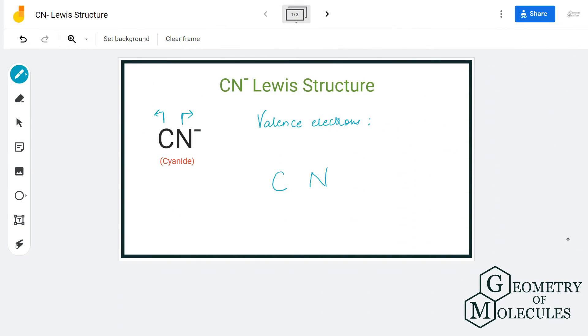Hi guys, today in this video we are going to look at the Lewis structure for cyanide ion. It is also known as cyanide anion, and to understand its Lewis structure we will first check the total number of valence electrons.